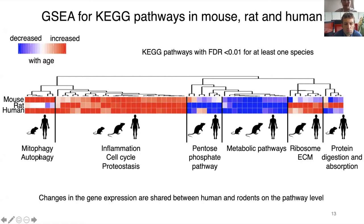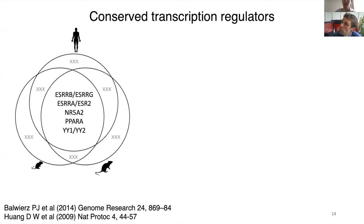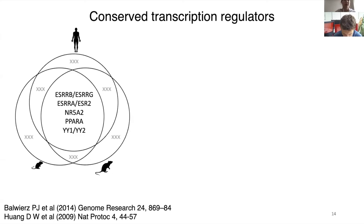From these results I concluded that gene expression changes are shared on the pathway level between humans and rodents but not on the gene level. This conserved, coordinated response of pathways during muscle aging — but not at the individual gene level — suggested that there might be conserved transcriptional regulators during aging across species.